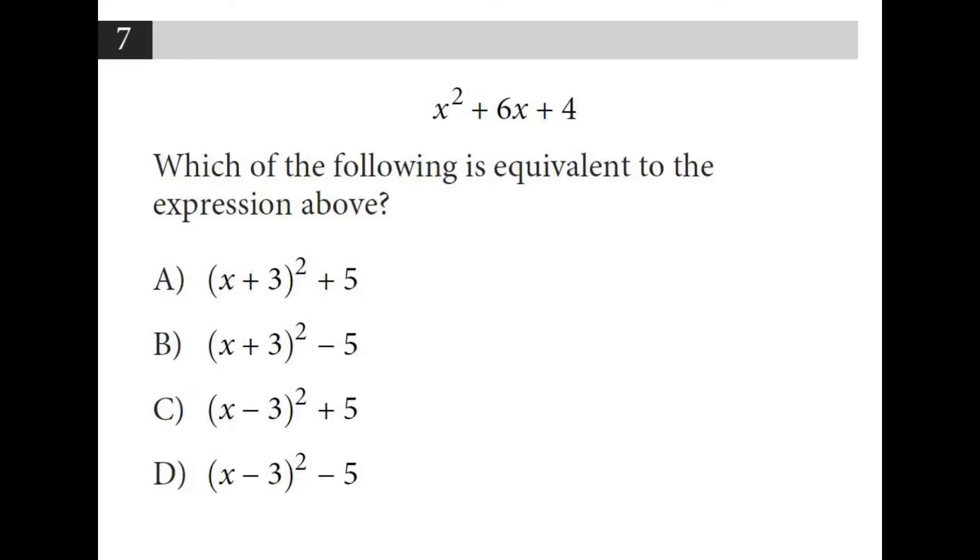If you tried to factor number 7, there's no such factors of 4 that add up to 6, so we can try completing the square. Half of 6 is 3, 3 squared is 9. So if I did plus 6x plus 5 plus 4 and then minus 5, I can now convert this because it's a perfect square. I can say that it's x plus 3 squared minus 5.